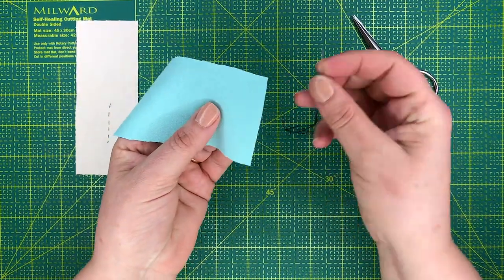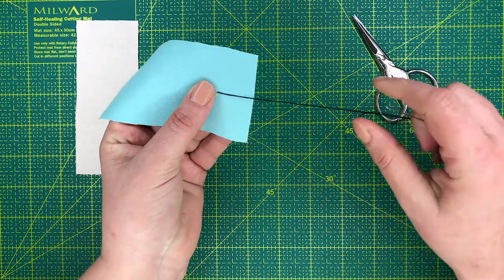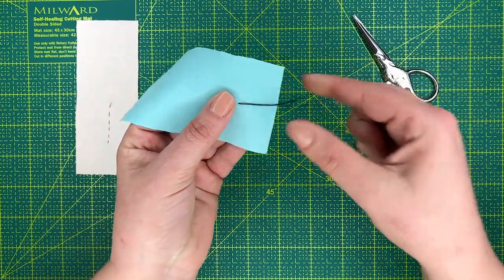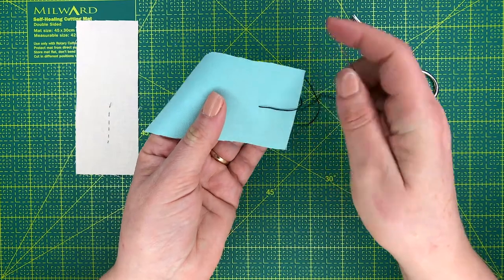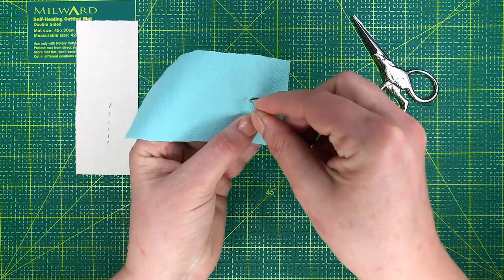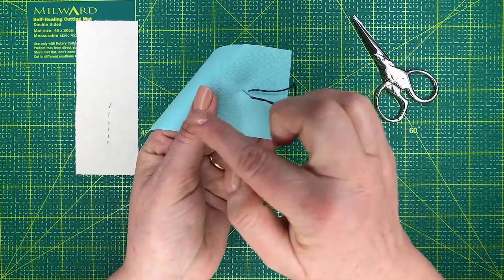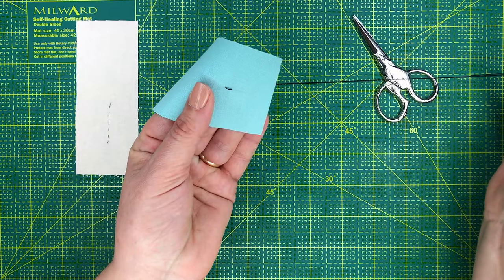basically what you do is, with the knot at the end of your thread, you poke the needle through from the reverse side of the fabric and embed the knot into the back of the fabric. And then moving the needle forward, poke back through the material in a straight line and pull the thread all the way through.